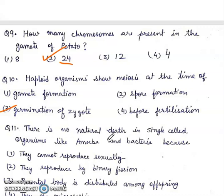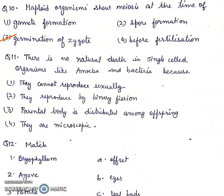Question 11. There is no natural death in single-celled organisms like amoeba and bacteria because: 1. they cannot reproduce sexually, 2. they reproduce by binary fission, 3. parental body is distributed among offspring, 4. they are microscopic. Right answer will be 3rd: parental body is distributed among the offspring.